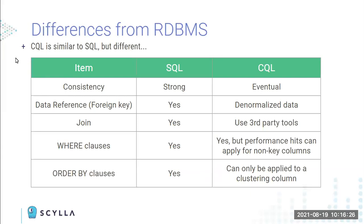Some differences between SQL and NoSQL — and each NoSQL database has slightly different approaches. When you see CQL here, that stands for Cassandra Query Language, which is what Scylla uses in most cases. In NoSQL/CQL, data is denormalized, there are no joins, no nested queries, and limited ordering — though there are ways to work around these limitations to some extent, which I'll cover shortly.